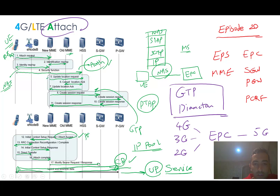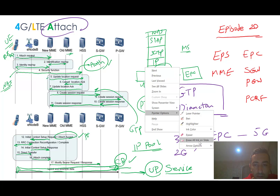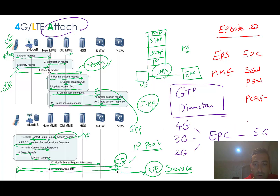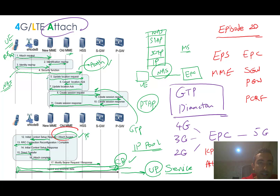For example, if you want to work with KPIs or KQIs in the future, someone might ask you: what is the Attach Success Rate in percentage? You can calculate this by dividing the number of Attach Accepts by the number of Attach Requests, then multiplying by 100. This gives you the Attach Success Rate as a percentage.